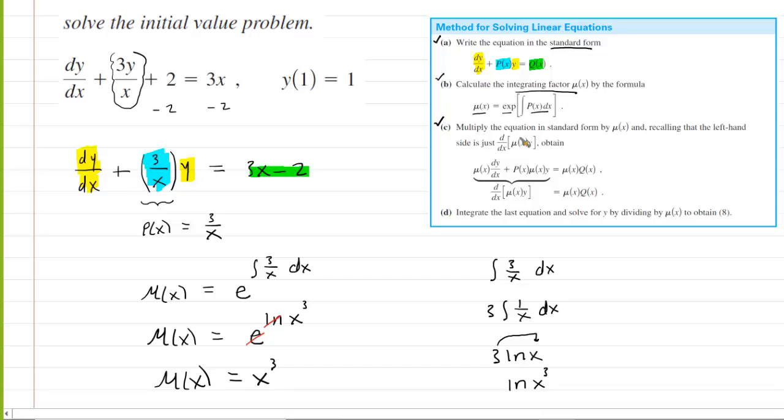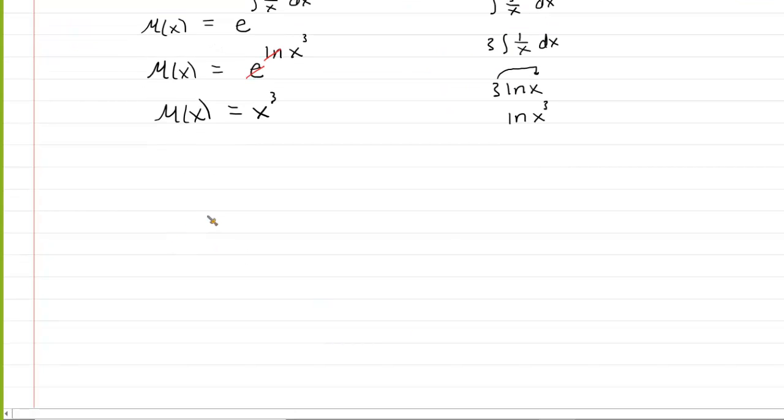We move to the third step, which tells us to multiply the equation written in standard form by the integrating factor. So we're going to borrow this equation right here. And we're going to multiply both sides of it by the integrating factor, which again is x cubed. So this side gets multiplied by x cubed. And then this side also gets multiplied by x cubed.